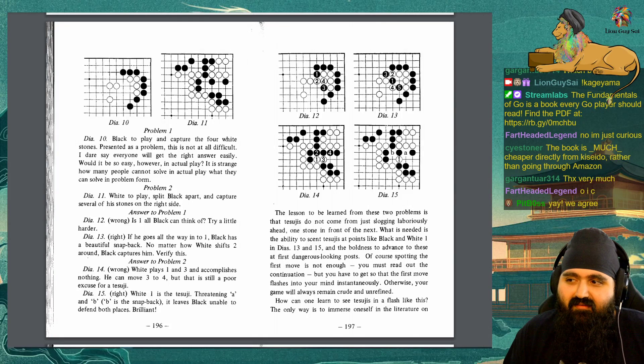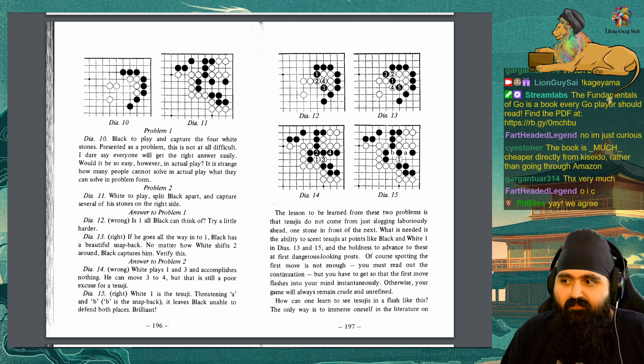This shape does not just occur here, it also crops up in a 3-4 point Joseki. Diagram 9: White 11 is the same move again. This shape can also be found in the middle and endgame, not just in the corner. Problem 1, Diagram 10: Black to play and capture the 4 white stones. Presented as a problem, this is not at all difficult. I dare say everyone will get the right answer easily. Would it be so easy, however, in actual play? It is strange how many people cannot solve in actual play what they can solve in problem form. Problem 2: White to play, split black apart, and capture several of his stones on the right side.